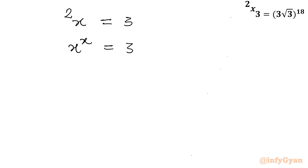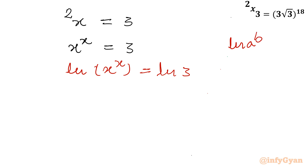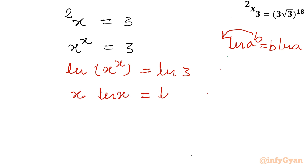This looks like an obvious case where the Lambert W function is needed. Taking ln of both sides: ln(x^x) = ln 3. Using the logarithmic property ln(a^b) = b·ln(a), the exponent comes down: x·ln(x) = ln 3.